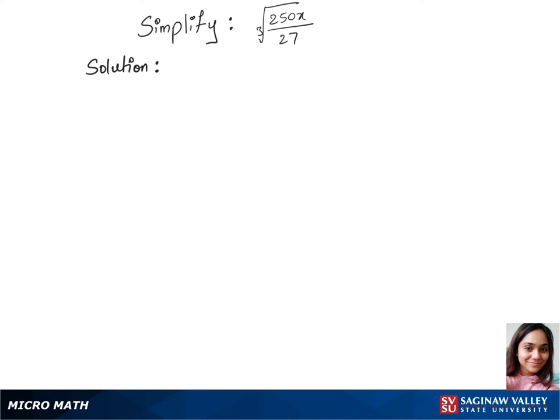Let's simplify this question by first separating the cubic root between the numerator and denominator and write this as cubic root of 250x over cubic root of 27.